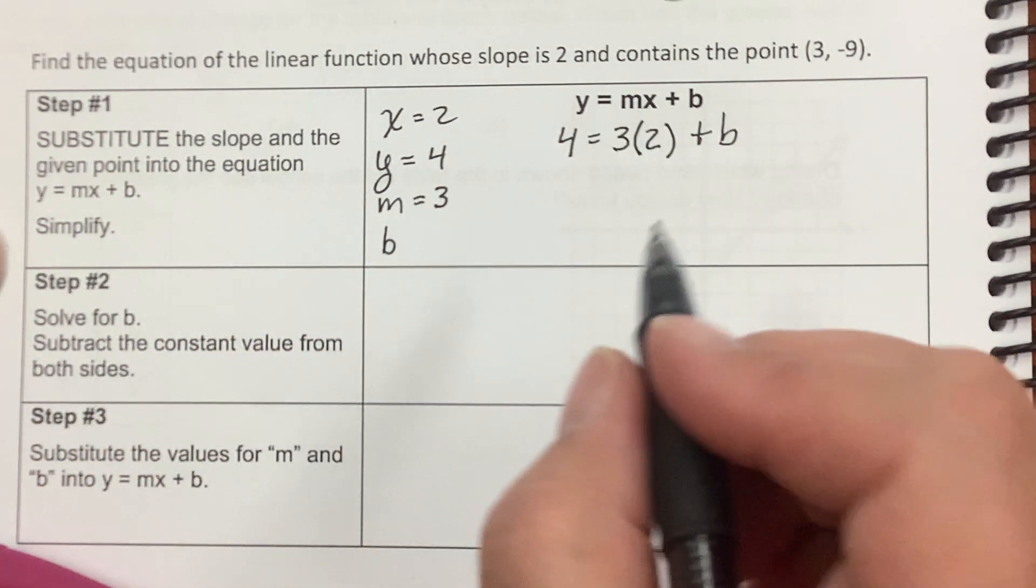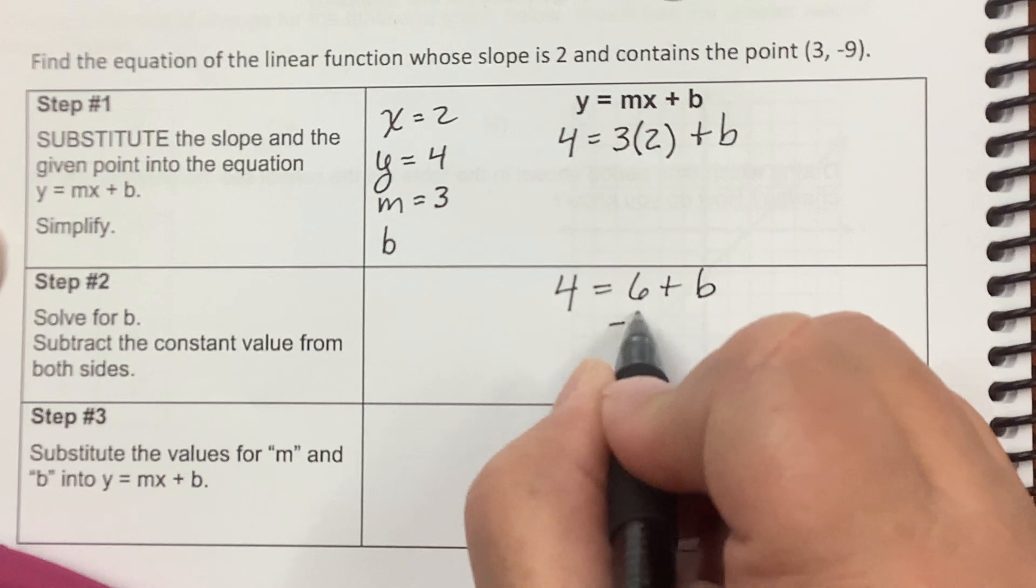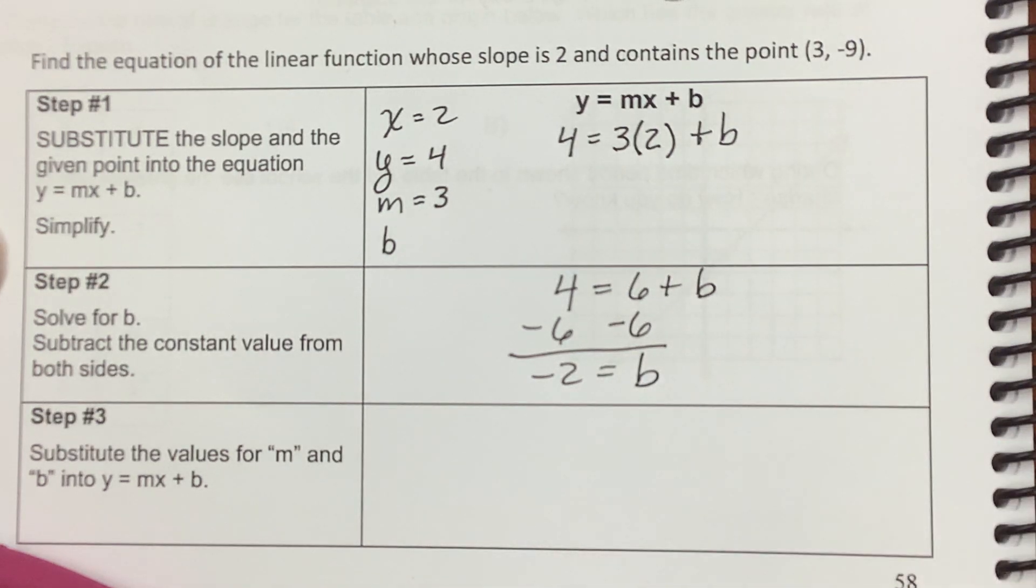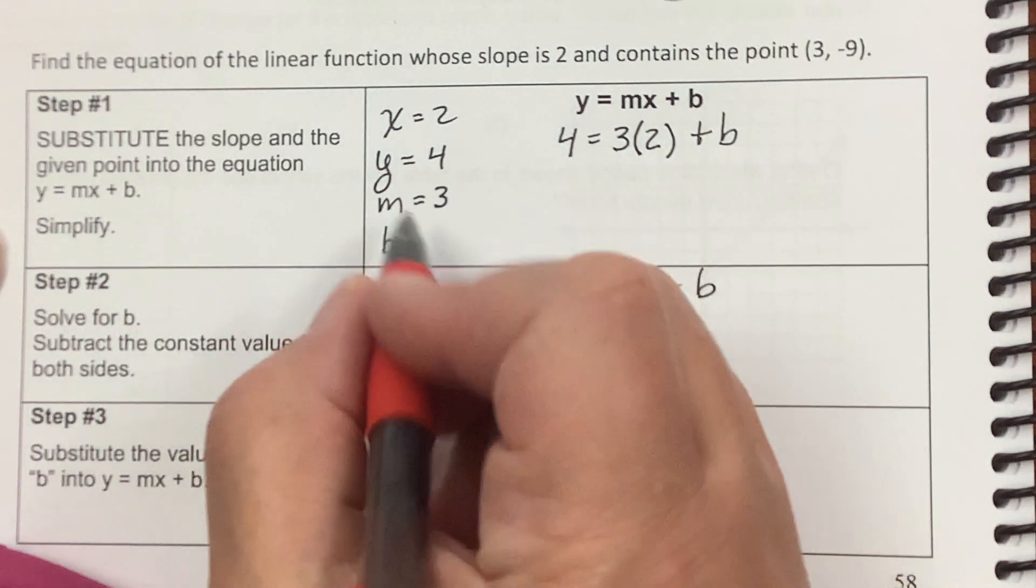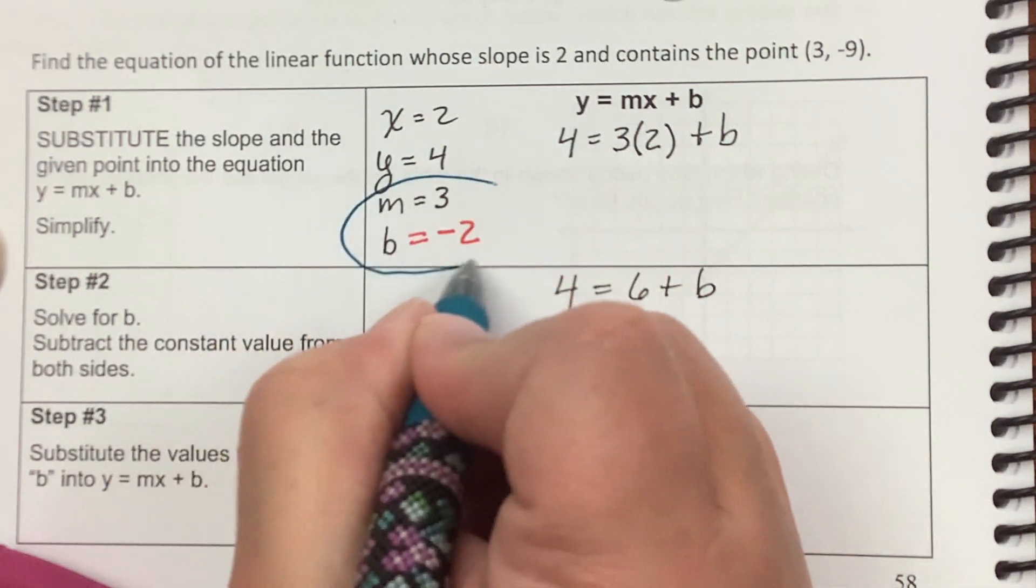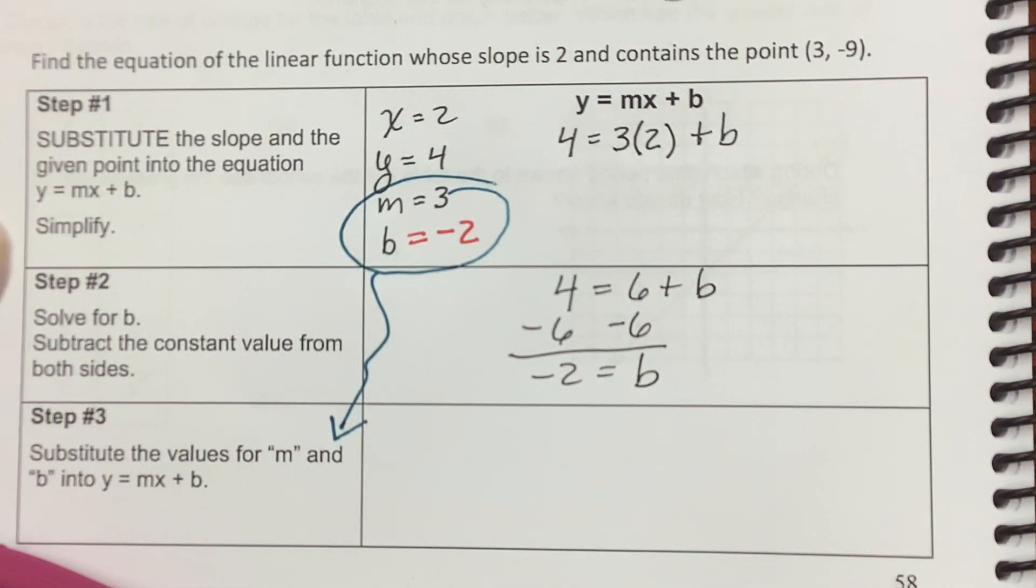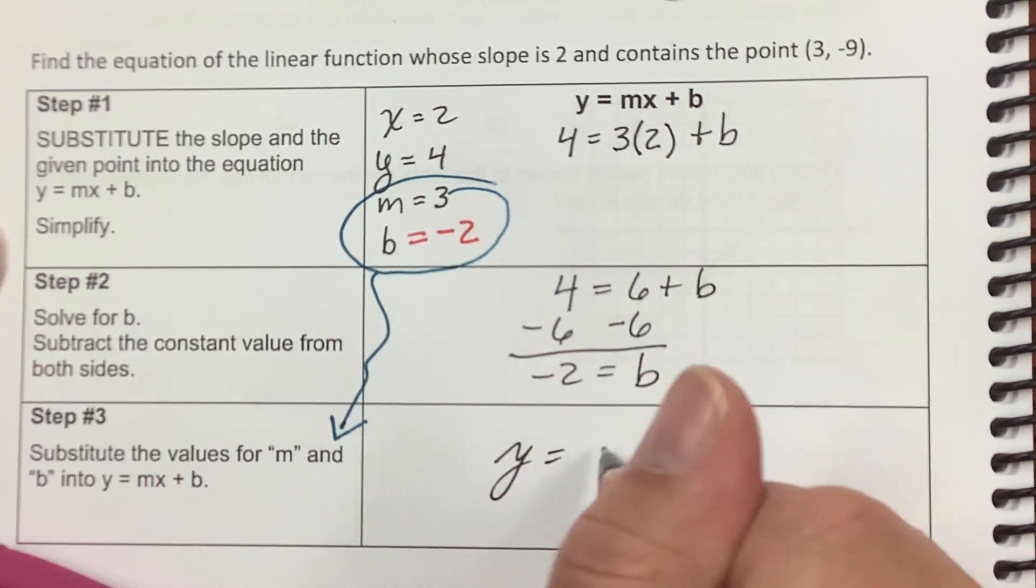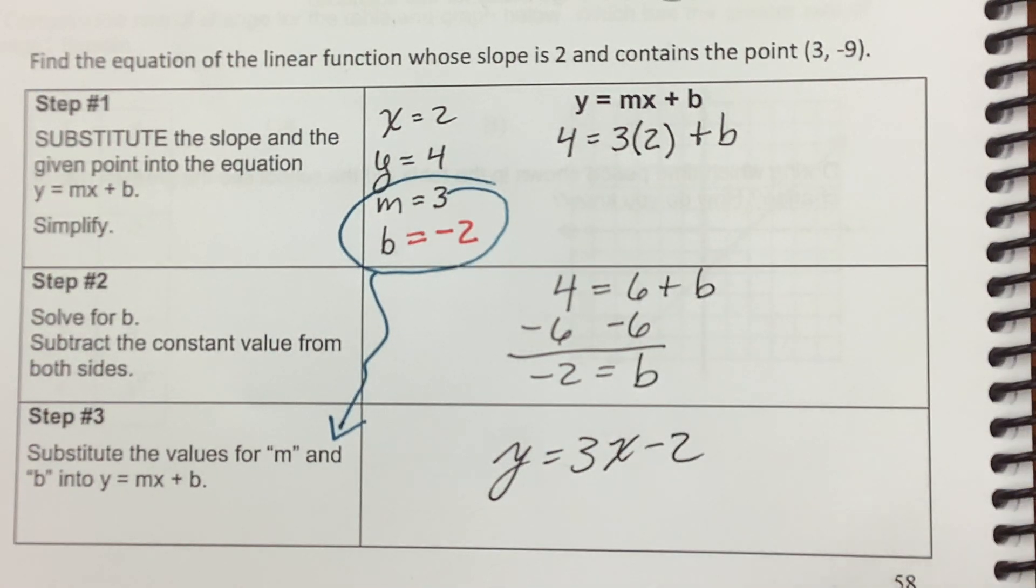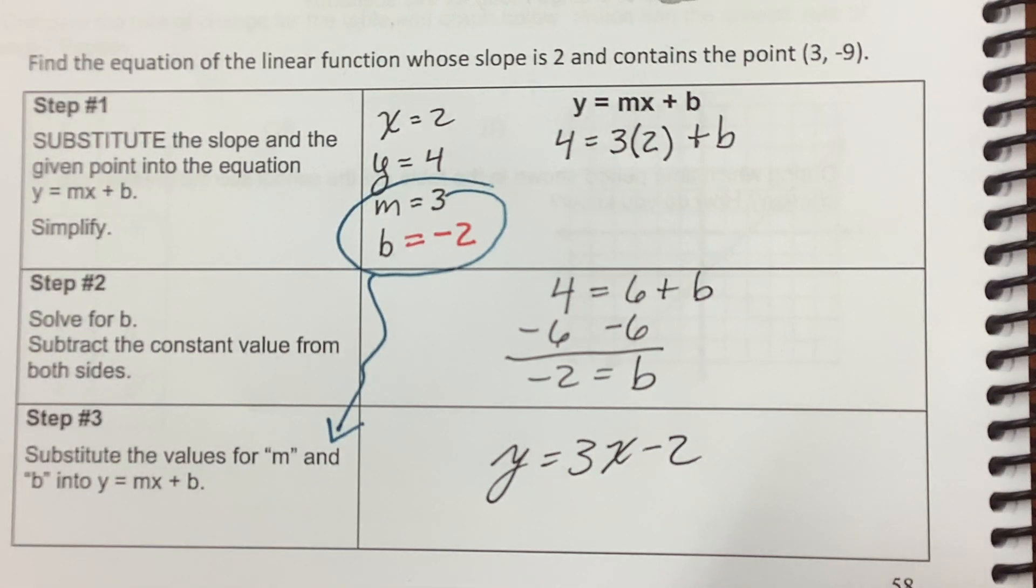So now I substitute what I know into this equation. Starting with y is 4. M is 3. There's a parenthesis because mx means 3 times whatever x is, so 3 times 2. And I don't know what b is. Solve for b. Subtract the constant value from both sides. I would have 4 equals 6 plus b. I'm going to subtract 6 from both sides. And negative 2 equals b. Now I found my missing b from up here. b was negative 2 or is negative 2. So I'm going to take this information and I'm going to substitute it. I don't need the x and the y to write an equation. I only need the m and the b.